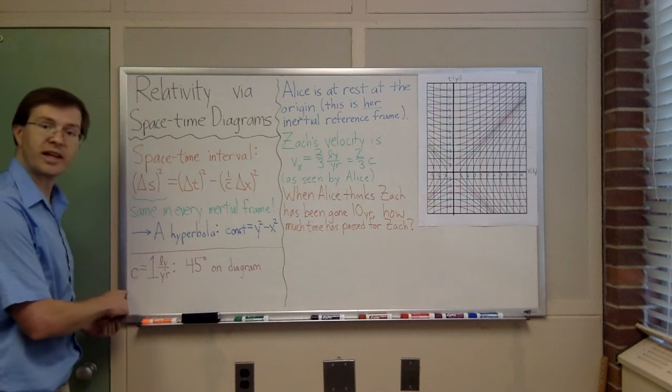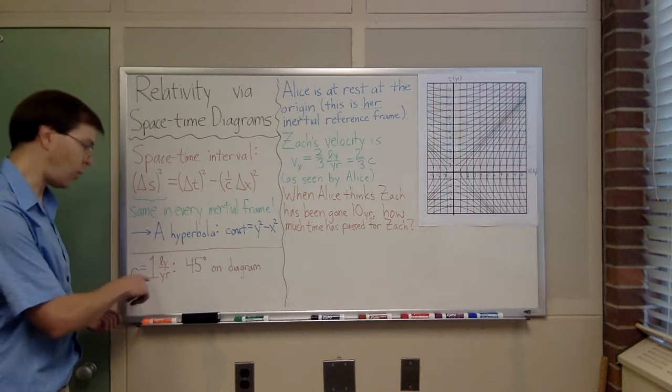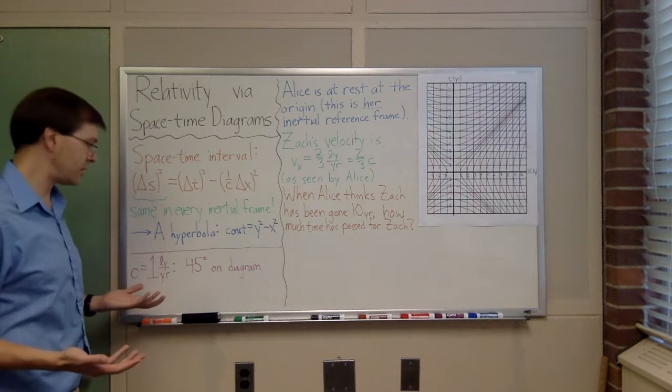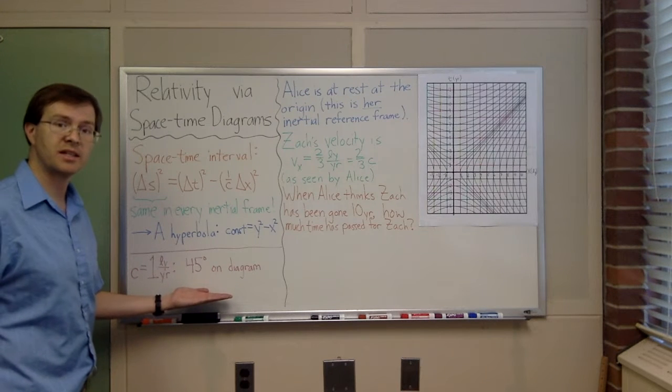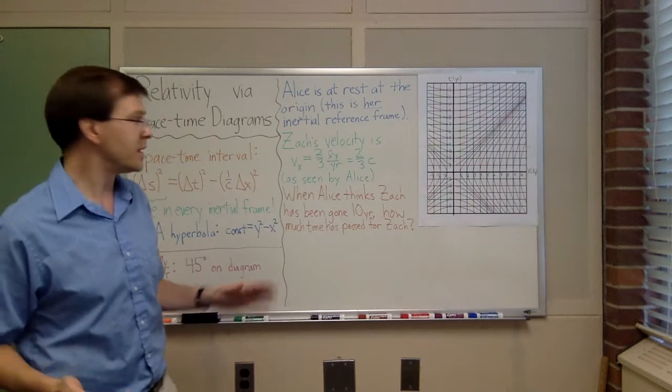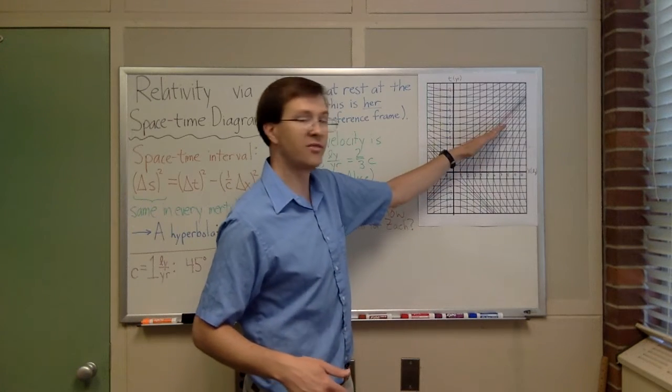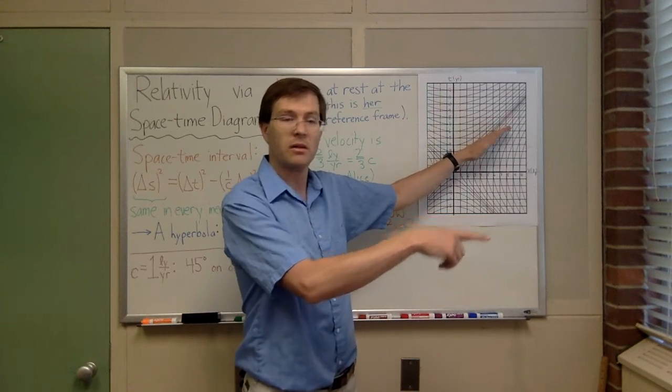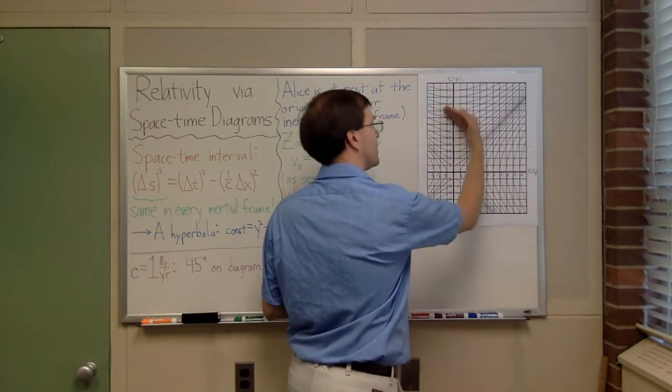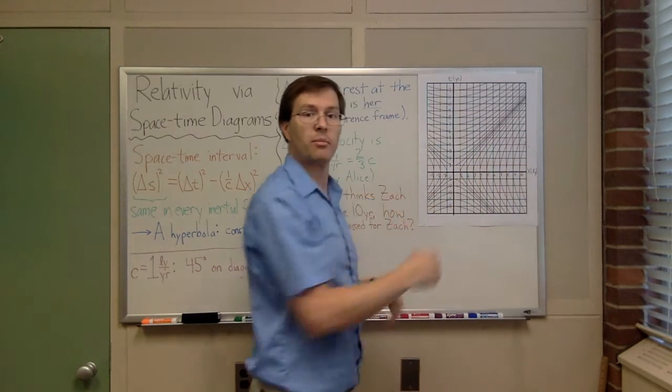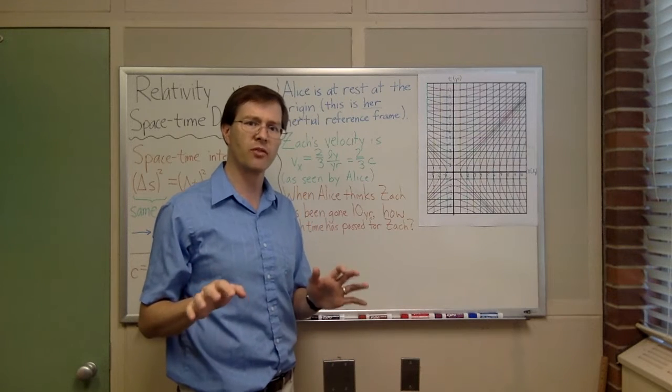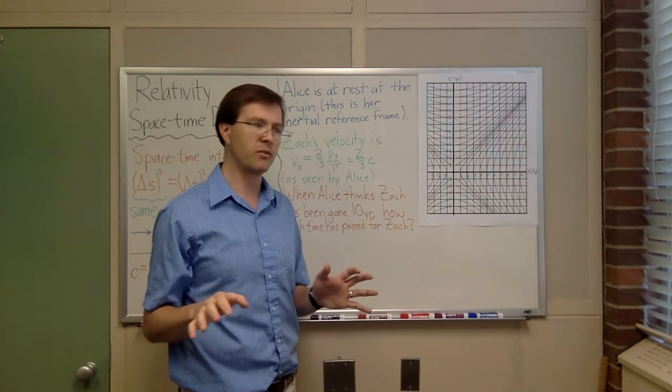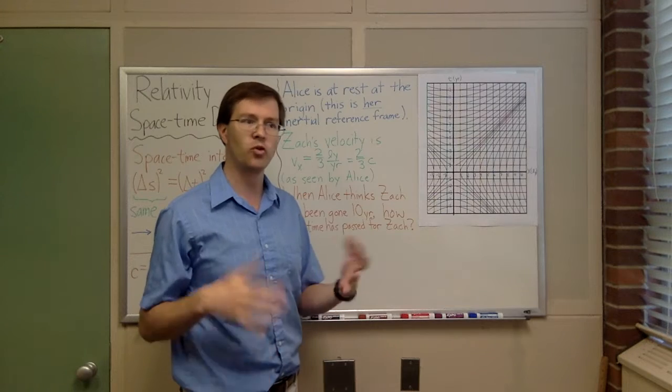I put this down here. The speed of light, lowercase c, is equal to one light year per year, sort of by definition, and on our diagrams, we're setting them up so that it's always 45 degrees. That turns out to be useful and important. It might be 45 degrees this way if the light is moving in the positive direction, or 45 degrees this way if the light is moving in the negative direction, but it will always be 45 degrees. That's one of the key things in relativity, that every observer agrees on the speed of light.